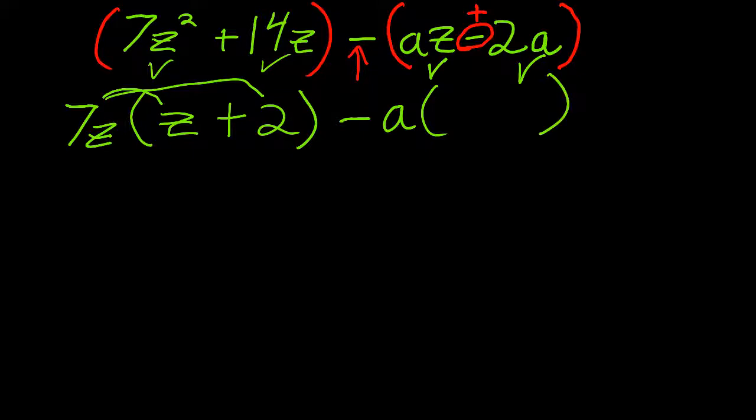A times Z is AZ. I have to remember that this is a plus now. A times two is 2A.